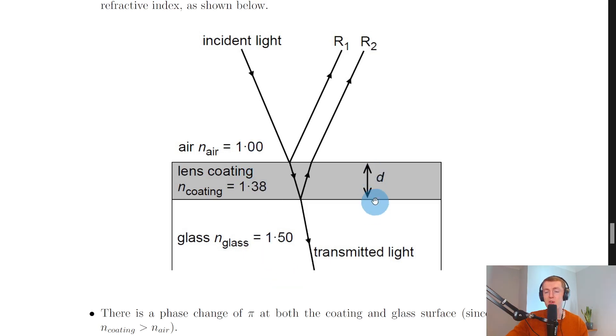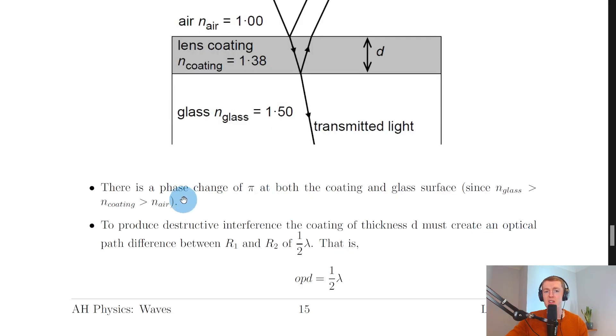But again, we've got the thickness or width of the coating labeled d here, and we've again got some partially reflected and transmitted light, causing these two rays, R1 and R2, to be produced. It then says there is a phase change of π at both the coating and glass surface, since the refractive index of the glass is greater than the refractive index of the coating, which is greater than the refractive index of air.